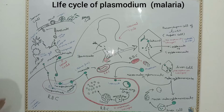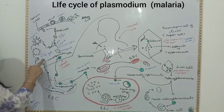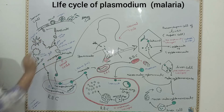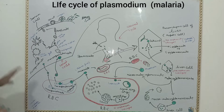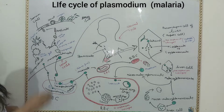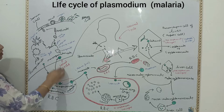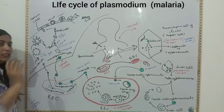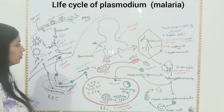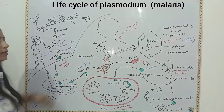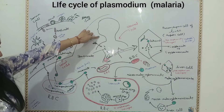We can see that the sexual part of the life cycle takes place in the gut of the mosquito, and the asexual cycle takes place in humans. Because the sexual cycle of Plasmodium takes place in the mosquito, the mosquito is called the primary host. And since the asexual cycle takes place in humans, the human is called the secondary host.